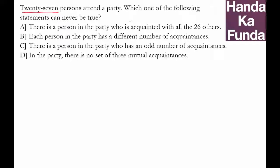The first statement is there is a person in the party who is acquainted with all 26 others. That is quite possible. There is no reason why there cannot be a person who is acquainted with all of them.